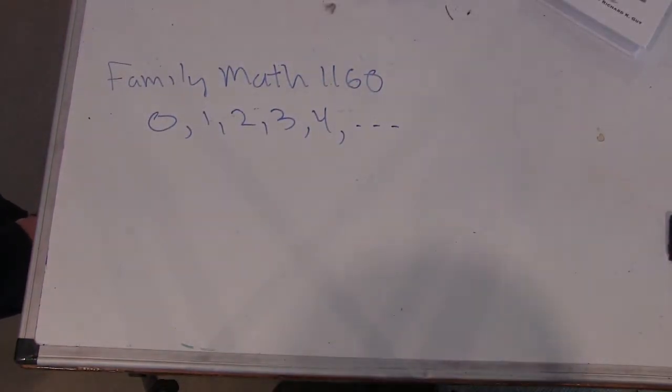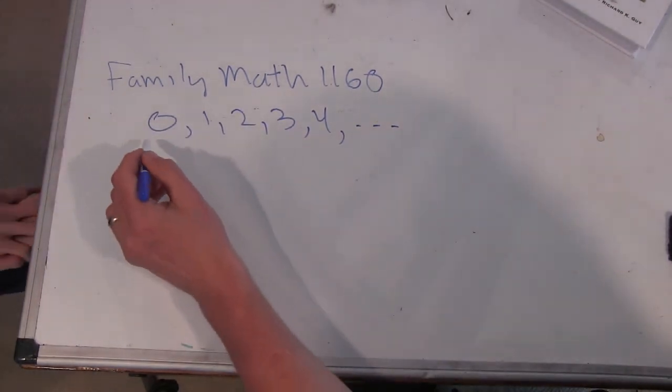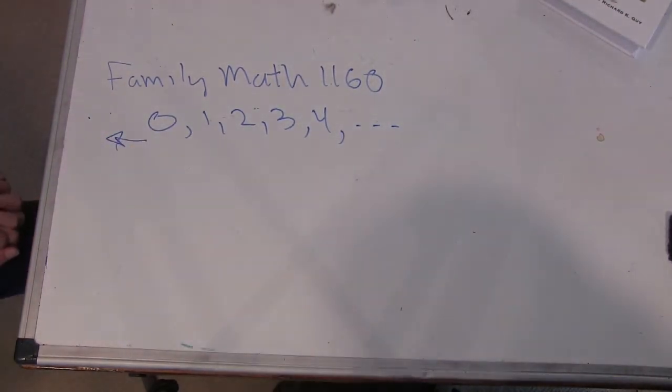Alright, so what are some things you know about the integers? Well, there's also negative integers. They can go in both directions. That's a very good thing to point out.